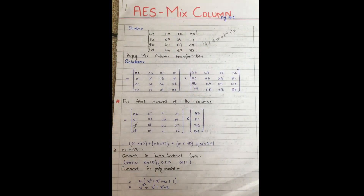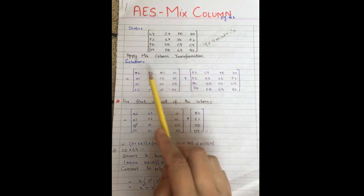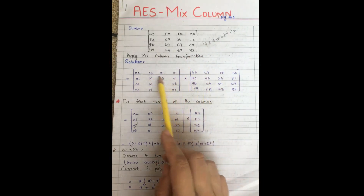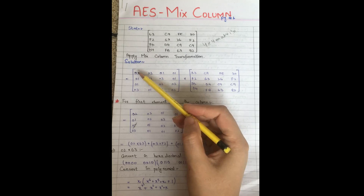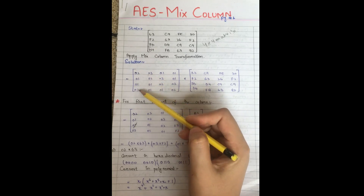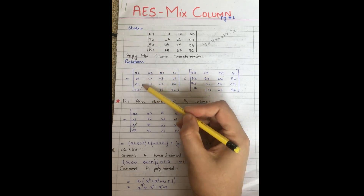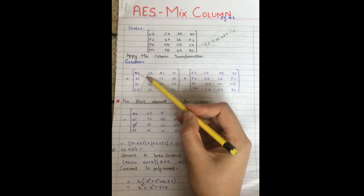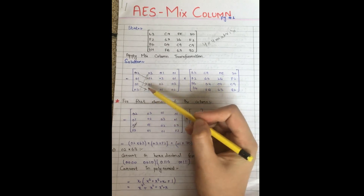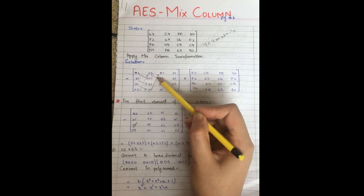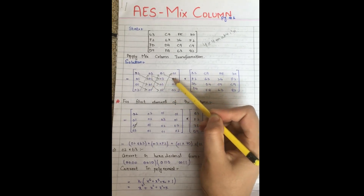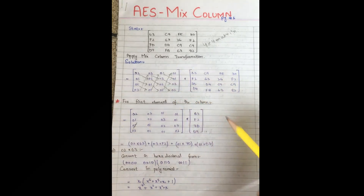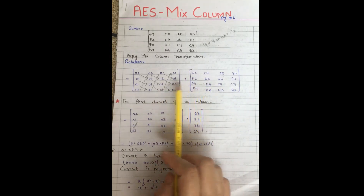Assalamu alaikum everyone, today we are going to solve the AES MixColumns problem in which we are given a state matrix. This is a 4x4 matrix. In the solution we have to multiply this state matrix with a MixColumns matrix. This matrix is easy to construct — we just have to remember the first column that is 02, 01, 01, and 03.